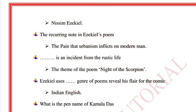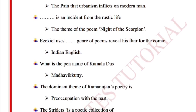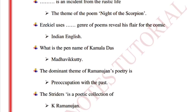The recurring note in Ezekiel's poems is the pain that urbanism inflicts on modern men. 'Night of the Scorpion' depicts an incident from rustic life — that is its theme.